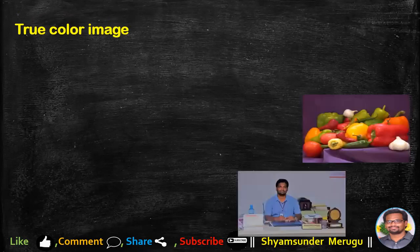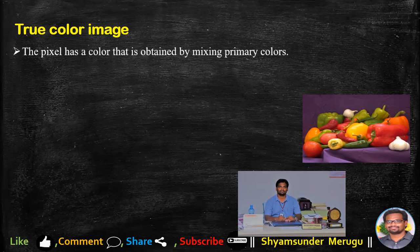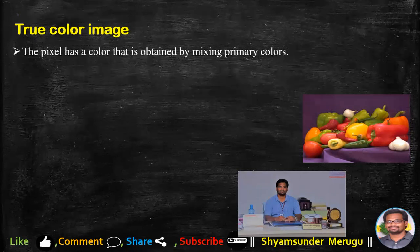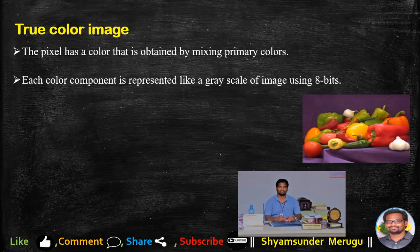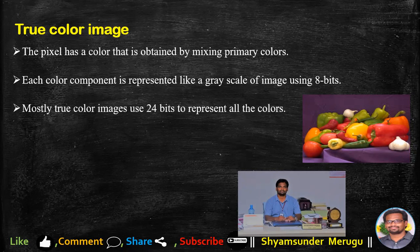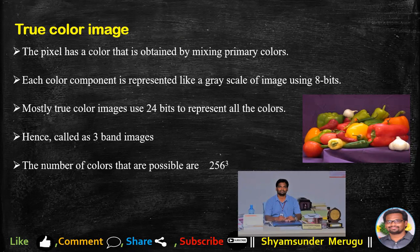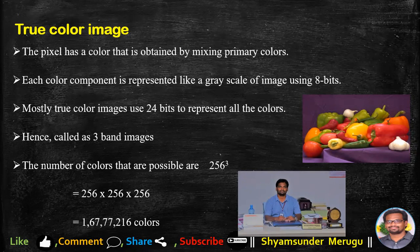Coming to true color images. Here we can see how a true color image looks like. The pixel has a color that is obtained by mixing primary colors. Each color component is represented like a grayscale image using 8 bits. Mostly true color images use 24 bits to represent all the colors, hence they are called as 3-band images. The number of colors that are possible are 256 to the power of 3, so that many colors can be obtained or seen in a true color image.